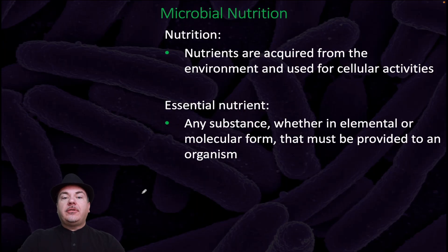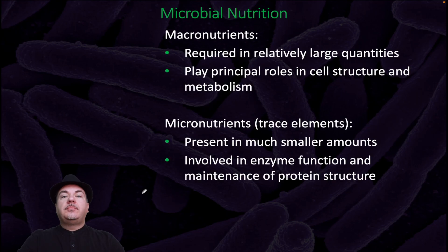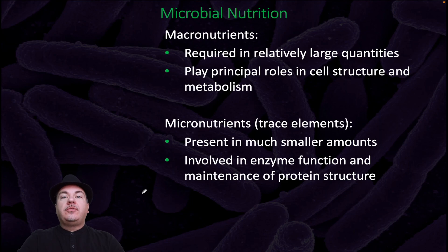In microbial nutrition, nutrients are acquired from the environment and used for cellular activities. An essential nutrient is any substance, whether in elemental or molecular form, that must be provided to an organism. Macronutrients are required in relatively large quantities and play principal roles in cell structure and metabolism. Micronutrients, also called trace elements, are present in much smaller amounts and are involved in enzyme function and maintenance of protein structure.